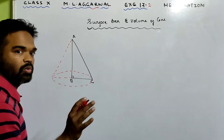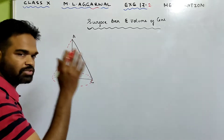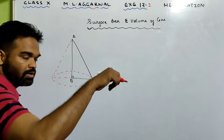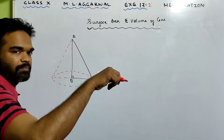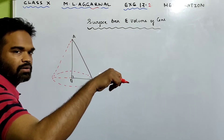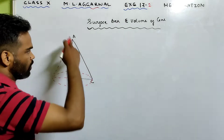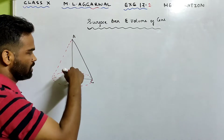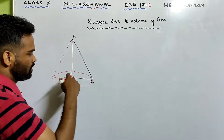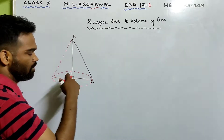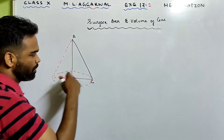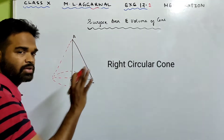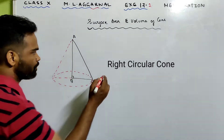We will get a cone. Imagine you take a right angle triangle and revolve it about one of its sides — either the length or the perpendicular or the base, but not the hypotenuse. You get a cone.